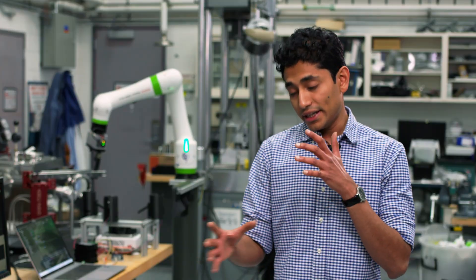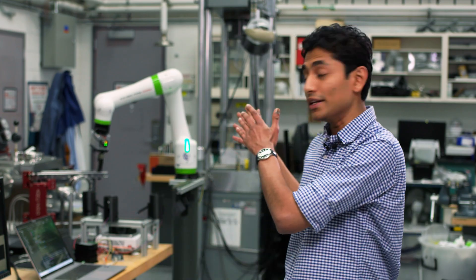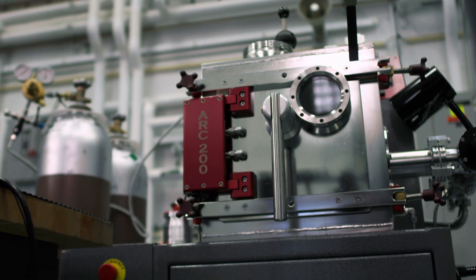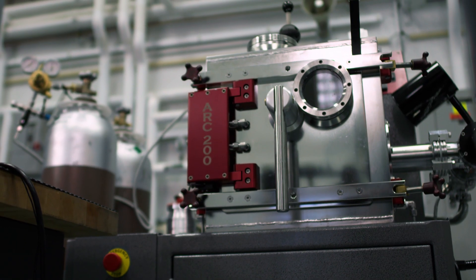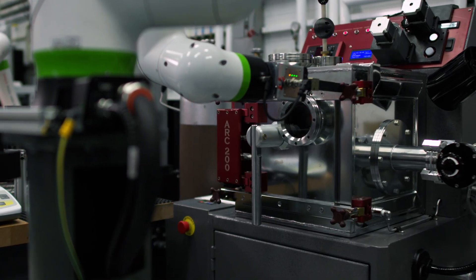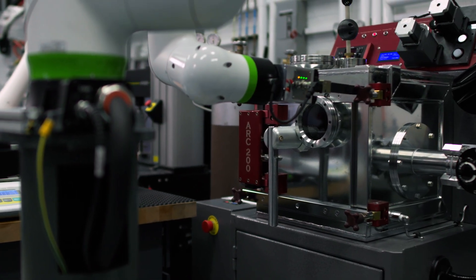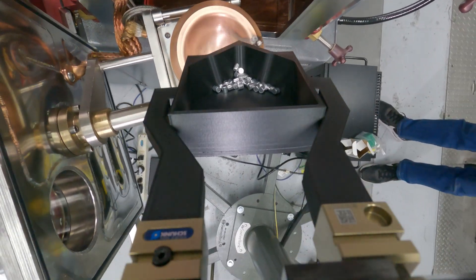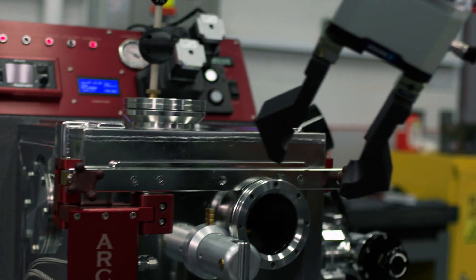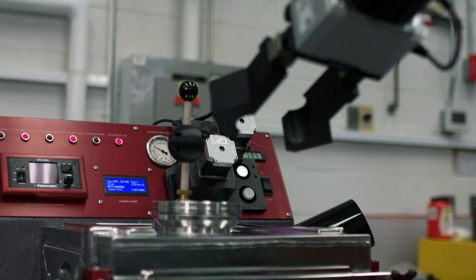When we are synthesizing a new alloy, this is where it starts. This is an arc melter where we put pure elements together and melt them together, and this robot is programmed to do that process by itself. And this whole loop can be running while I go home, melting new compositions, testing those materials so that I come back in the morning and I can see how well we did.